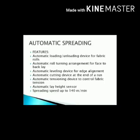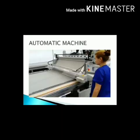Automatic spreading features: automatic loading and unloading device for fabric rolls, automatic roll turning arrangement for face-to-back lay, and cutting device at the end of a run. My tensioning device controls fabric tension, meaning it controls wrinkles. Lay height sensor is also included. Spreading speed is up to 140 meters per minute. This is the automatic spreading machine.